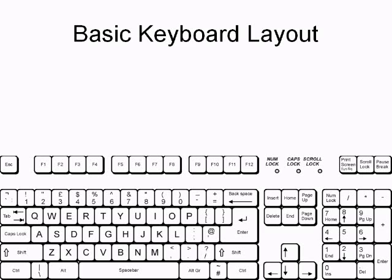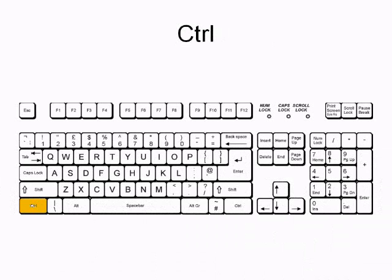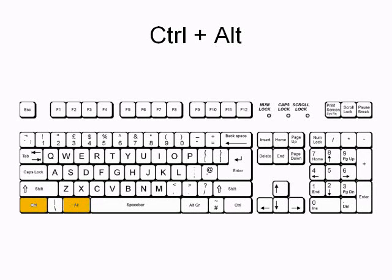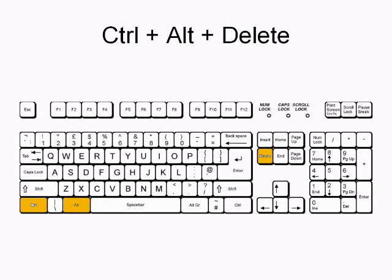This is a basic keyboard layout, and to access the Task Manager you need to press Control, Alt, Delete. The Control key is found there in yellow, the Alt key is there, and the Delete key is there. You need to press Control, and while holding it hit Alt, and while holding Alt hit Delete — all three at the same time.